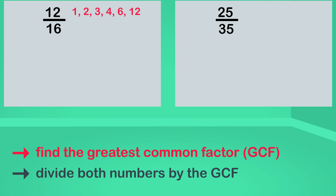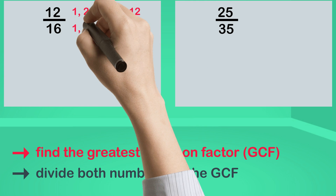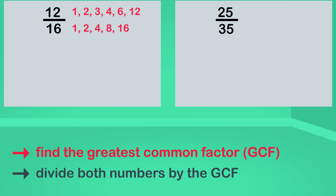And here are the factors of sixteen: one, two, four, eight, and sixteen. Twelve and sixteen have these factors in common. The largest of the common factors is four.